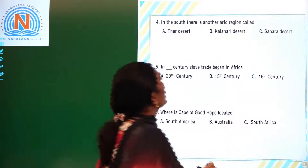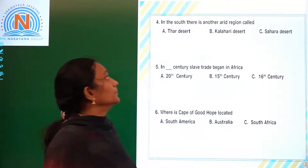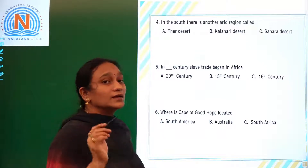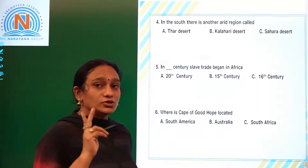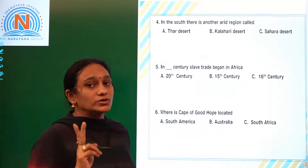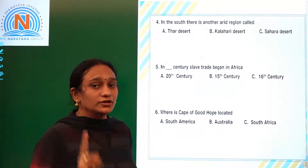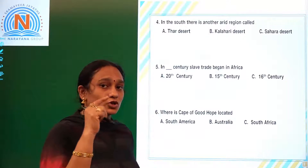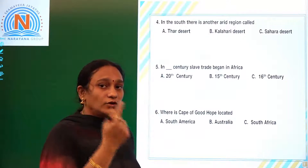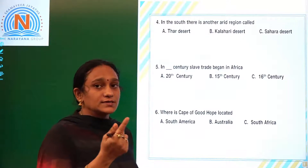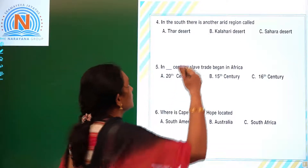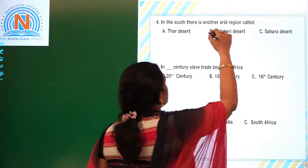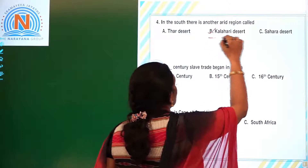In the south of Africa there is another arid region. So in Africa there are two dry areas: the first one at the top is the Sahara Desert, which we already discussed, and in the southern part it is the Kalahari Desert.